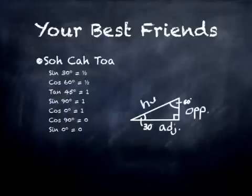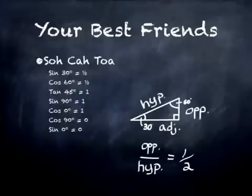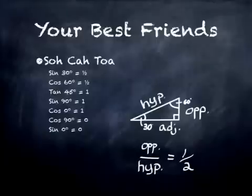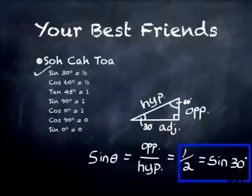These are common because sine of 30 and cosine of 60 are common functions. If 30 degrees is the angle we're interested in, opposite divided by hypotenuse — in a 30-60-90 triangle — gives us a ratio of 1 over 2. The hypotenuse is always twice as long as the opposite side, where the opposite side is the length opposite the 30-degree angle. Since opposite over hypotenuse equals sine theta, sine of 30 degrees equals one half. So you should memorize that sine of 30 degrees equals one half.